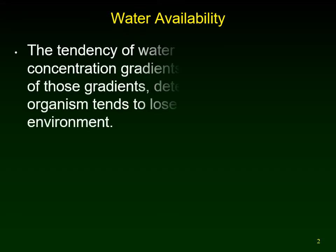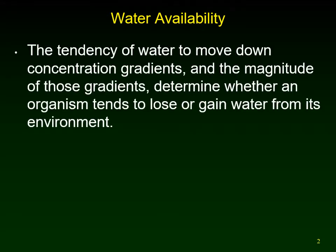We're looking at water movement. Water will move from areas where you have more water to areas where you have less water — just like with temperature, where heat moves from warmer places to cooler places. Water moves down a concentration gradient, from where there's more water to where there's less. The size of those gradients will determine whether an organism is going to lose or gain water from its environment.